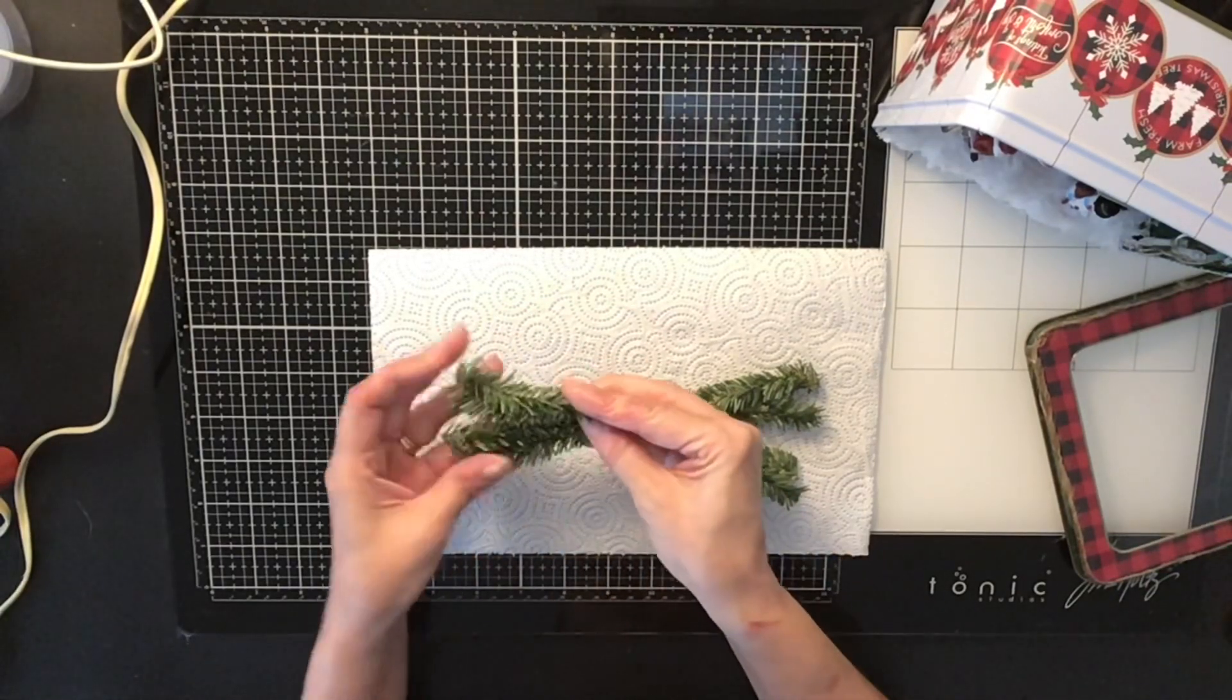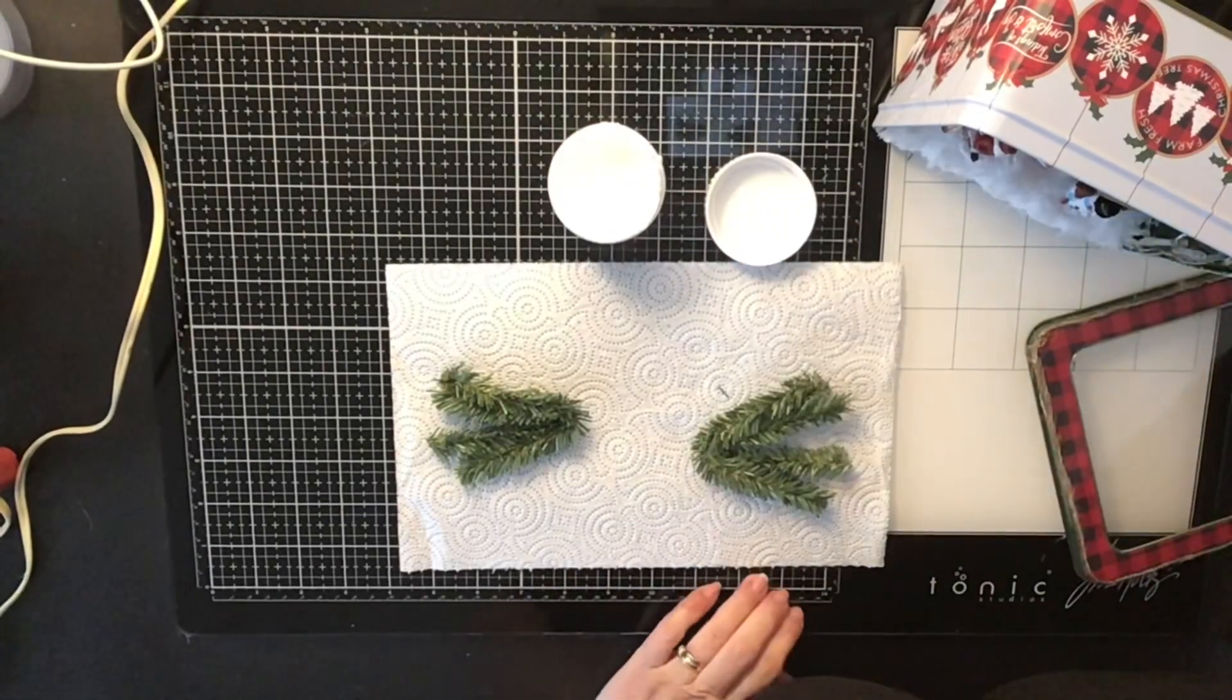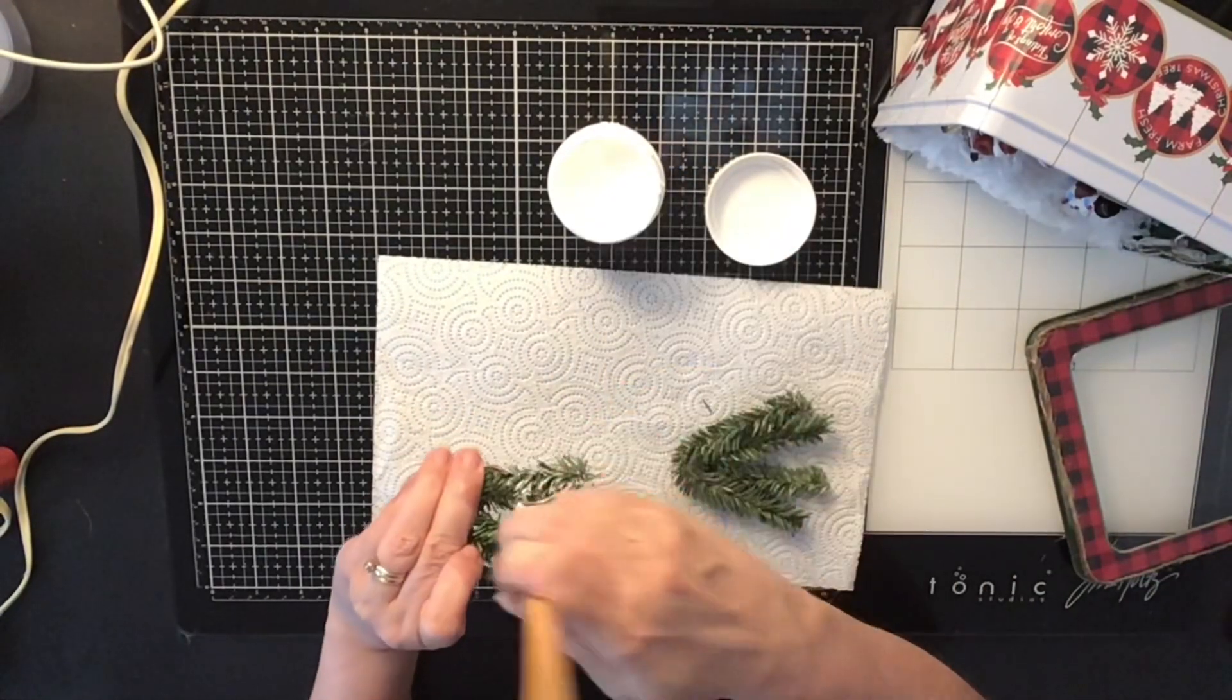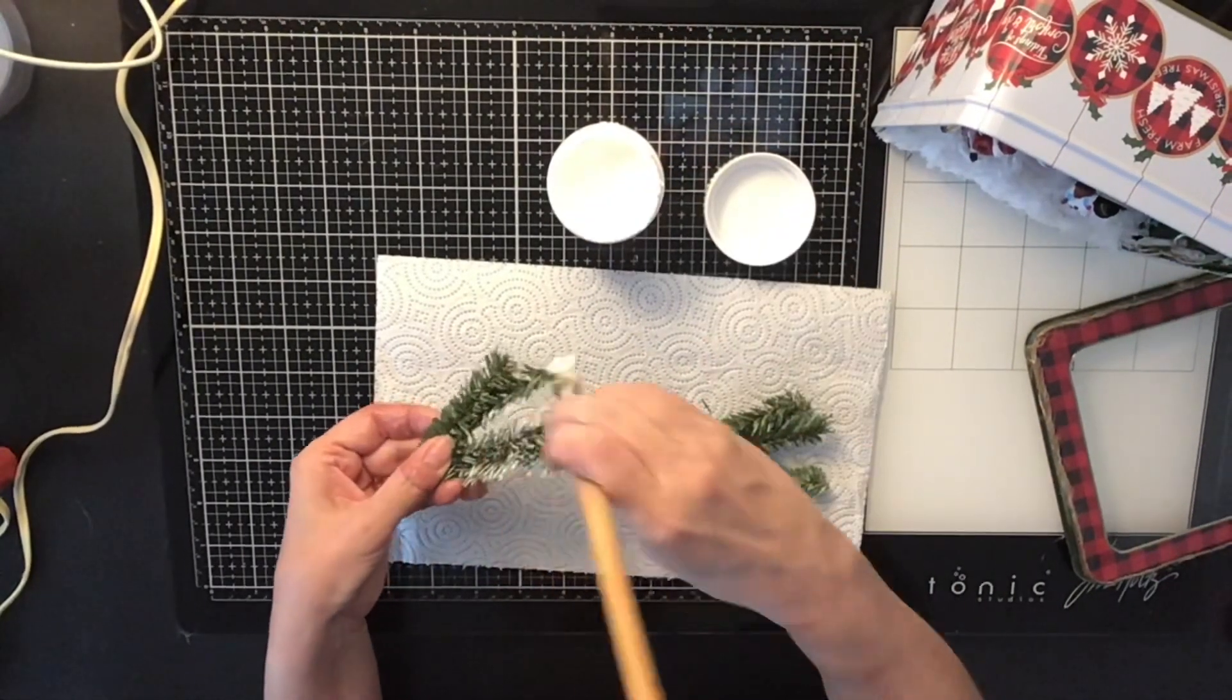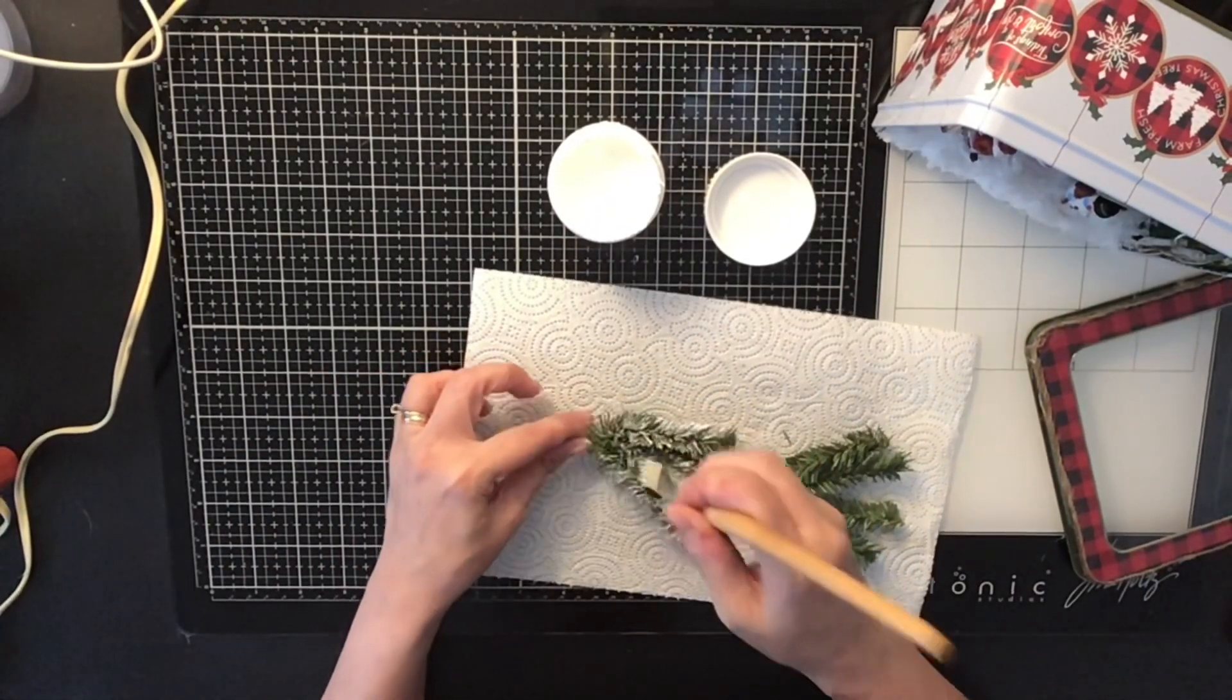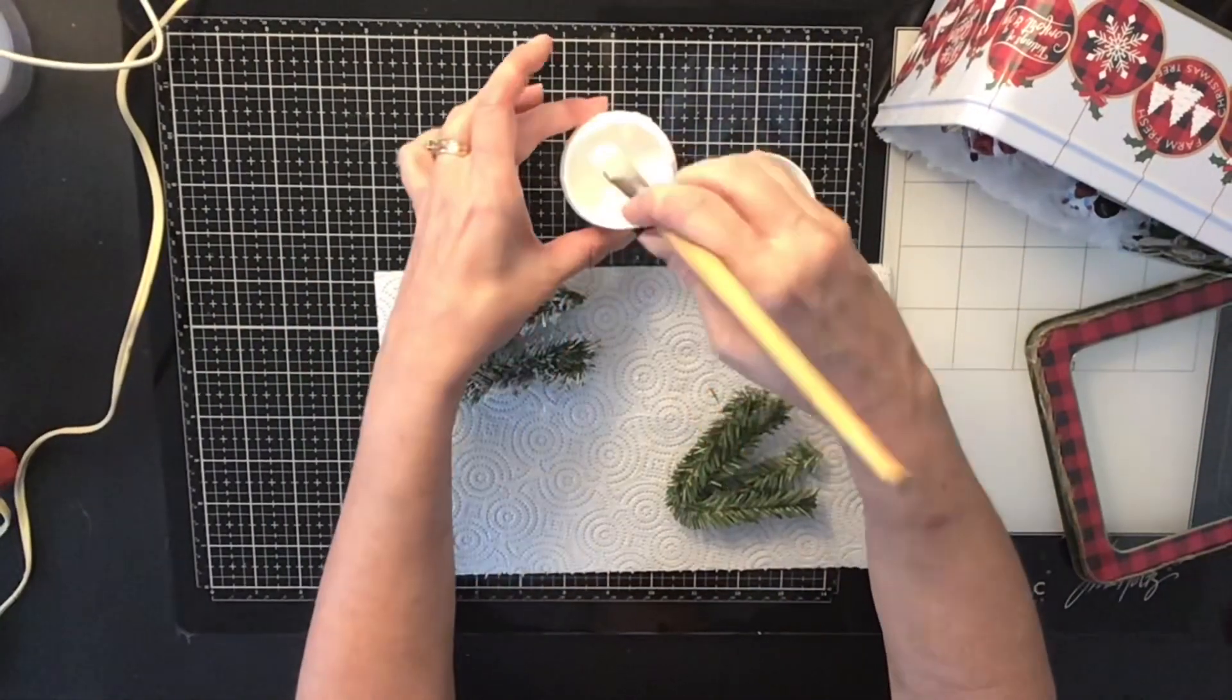And then what I did is I took some of my white gesso. Or you could use white acrylic paint if you don't have white gesso. And what I did is I spruced them up a little bit and I wanted to make them look like they had snow. So what I did is I took my little rough brush that I use all the time with my gesso and I just kind of brushed it on. And you could do it with white acrylic paint or any white paint that you have will do the trick. And there you go. Now it looks like they have snow on them which is super cool. And it kind of tones down the green a little bit and doesn't make it look so fake. And that's what I really like about that idea. And I did it with both of them.